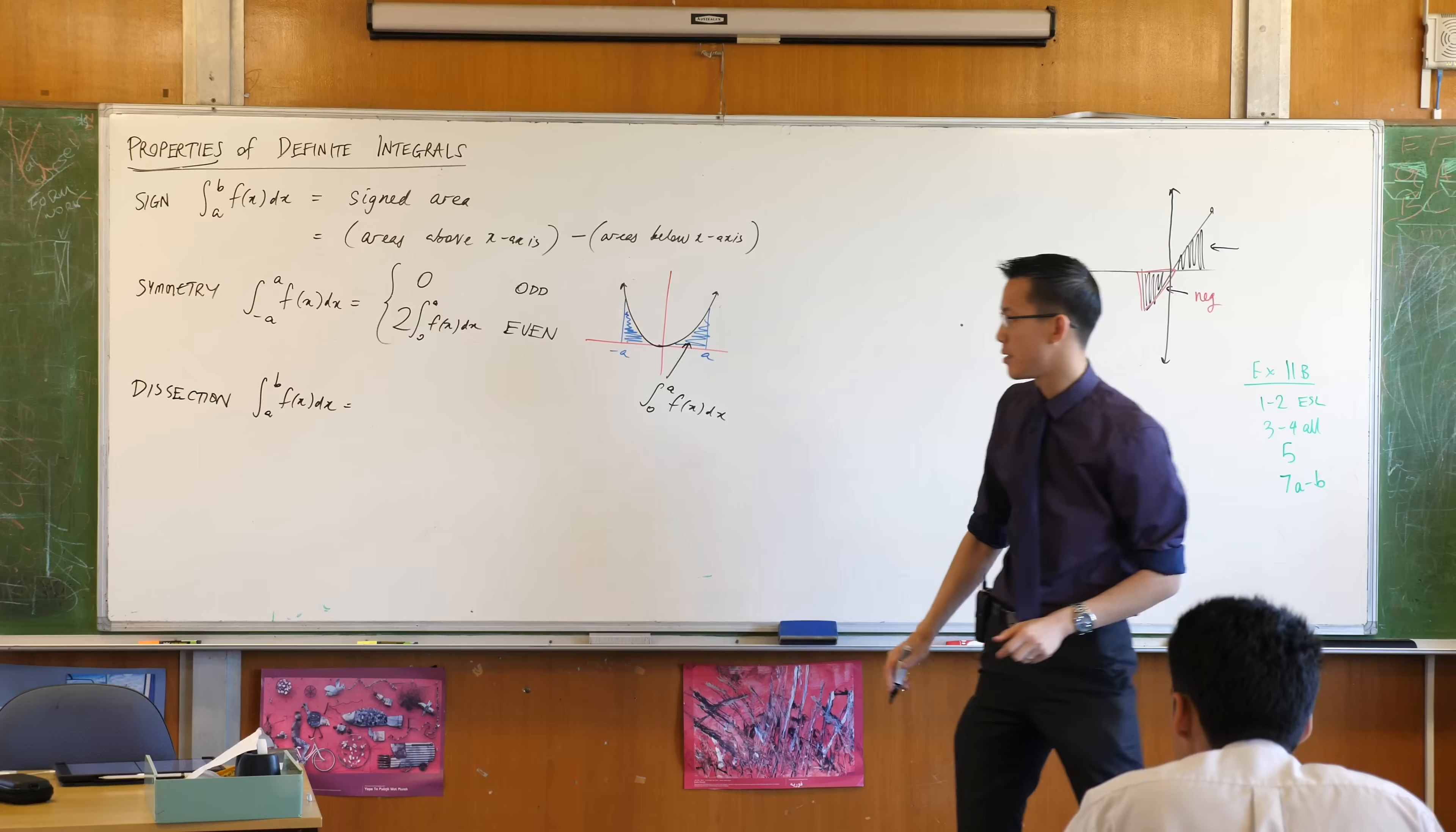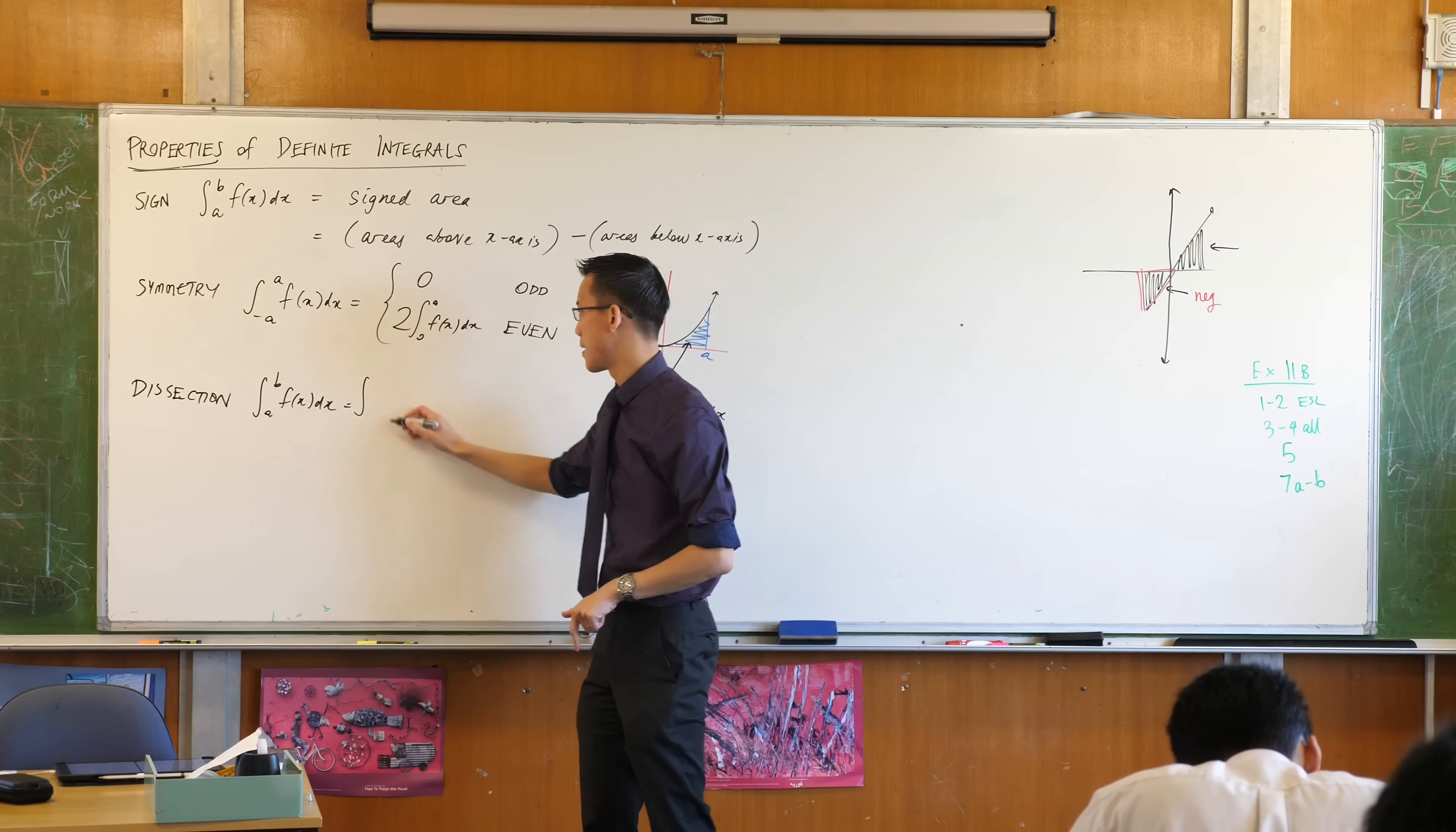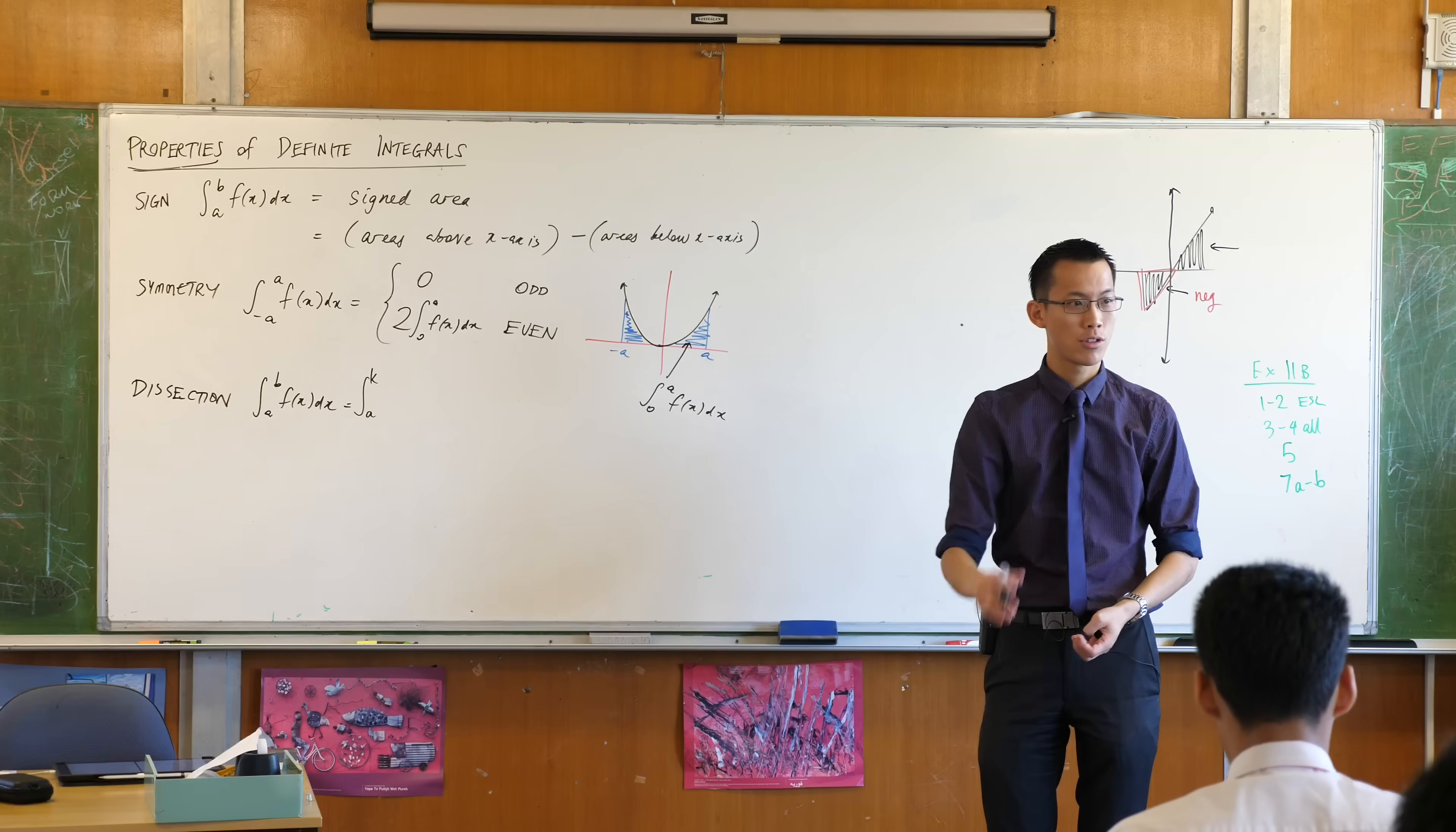You can break it into two pieces, and there's lots of ways you can break it, but this particular property is about changing the boundaries. Let's say I have another value in between a and b called k.